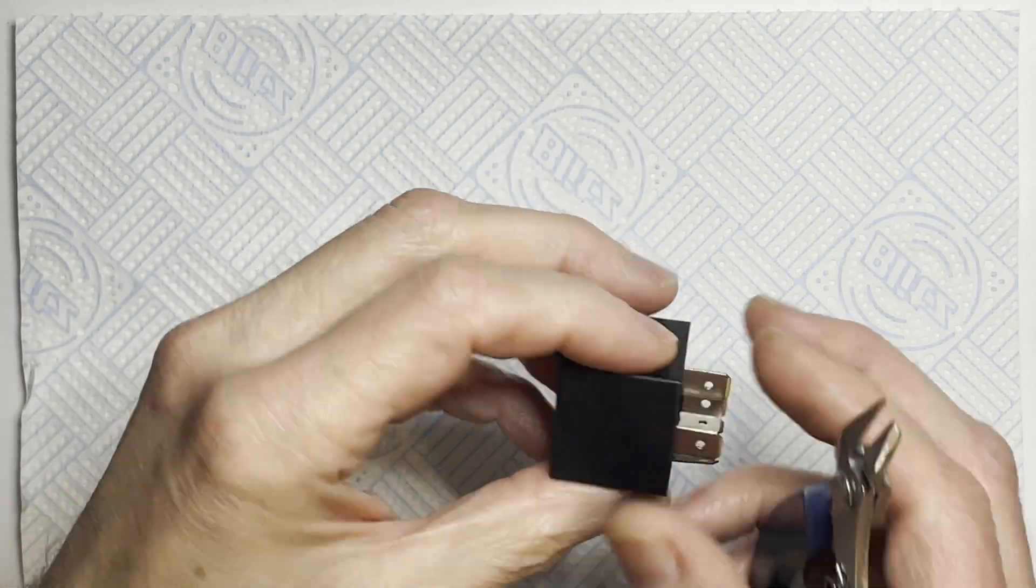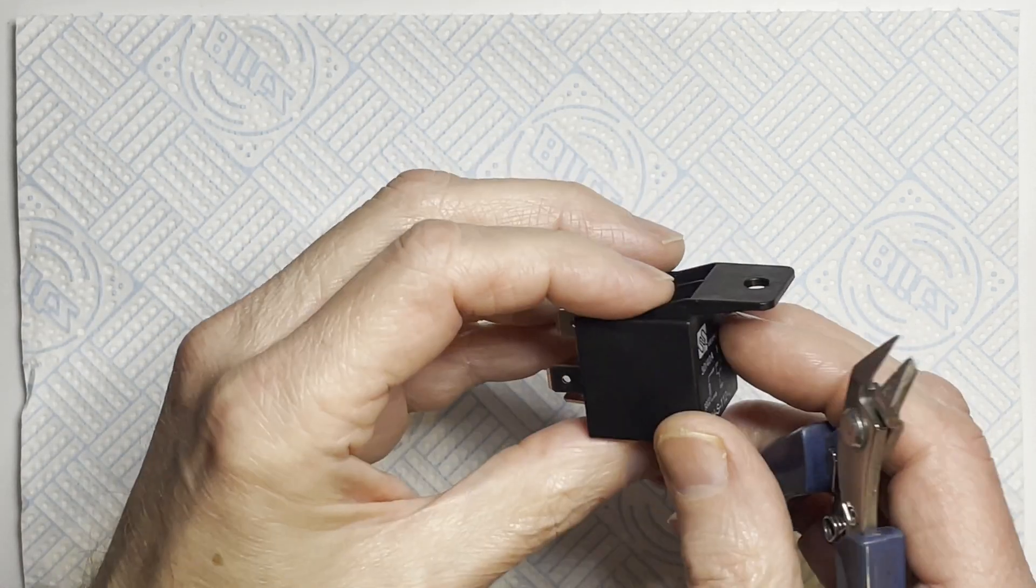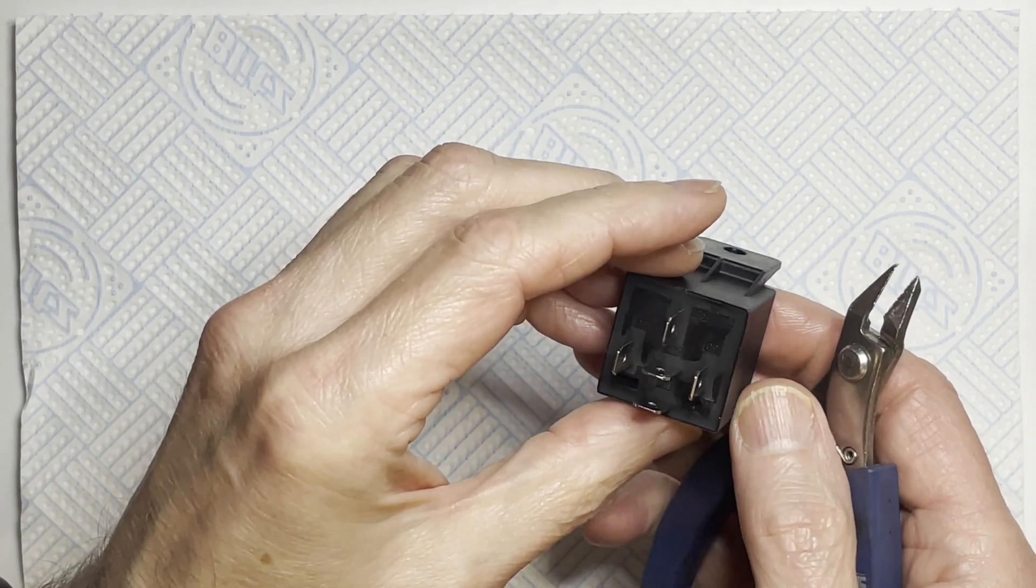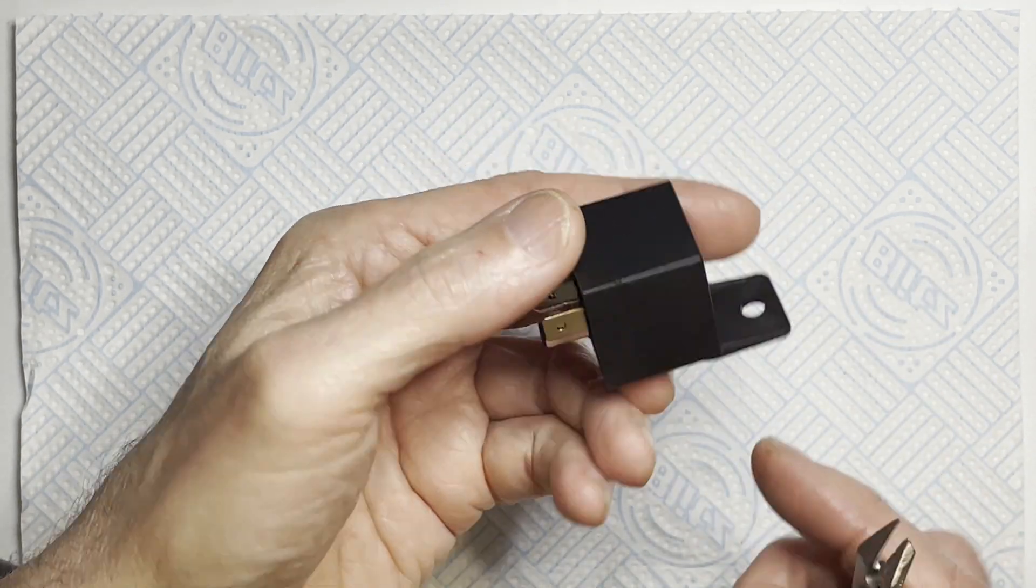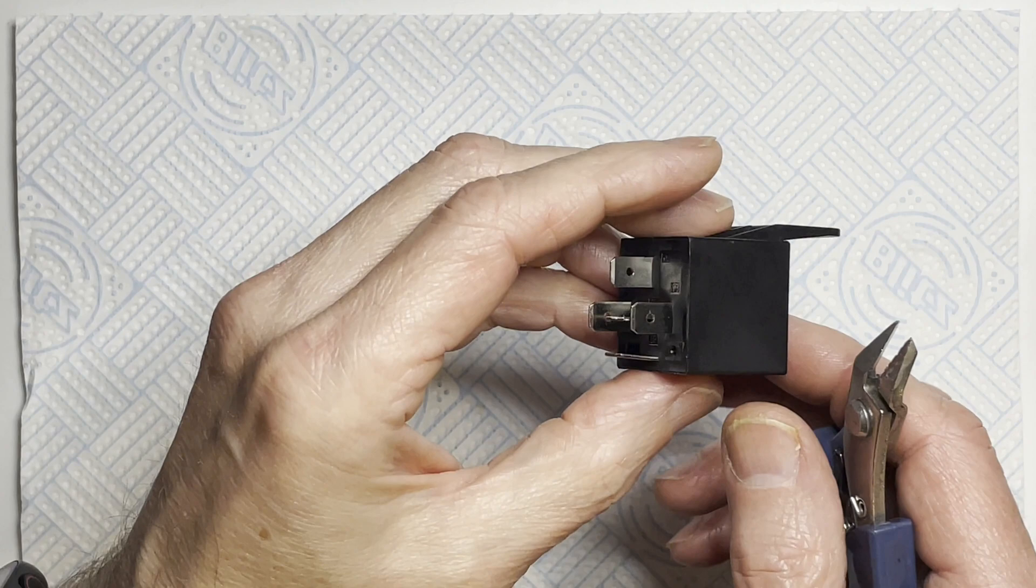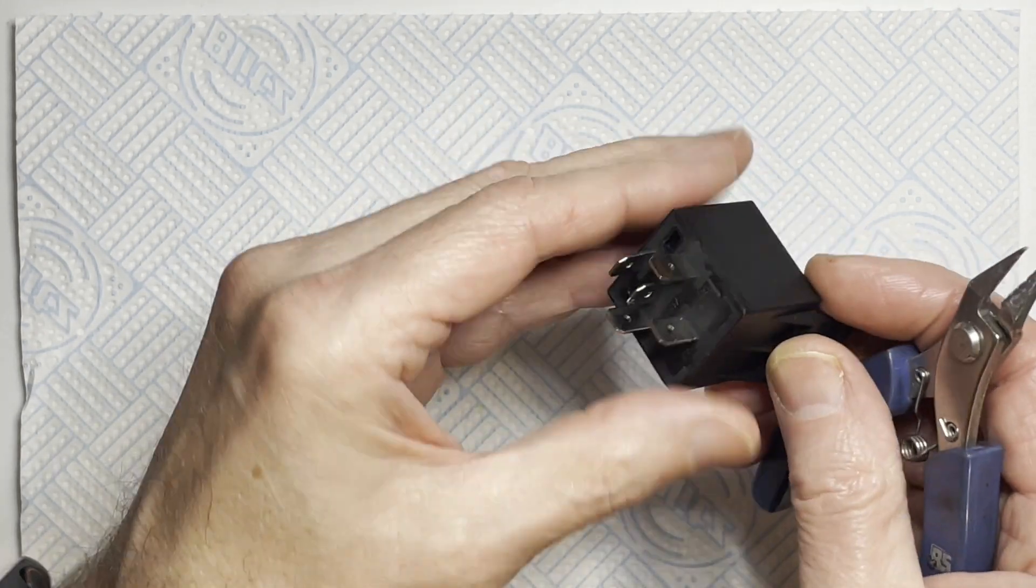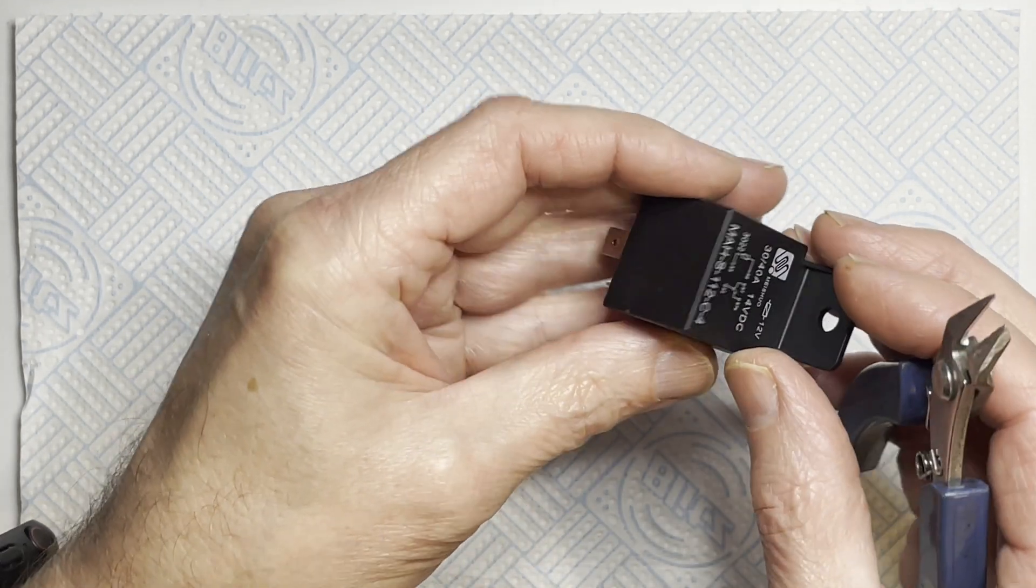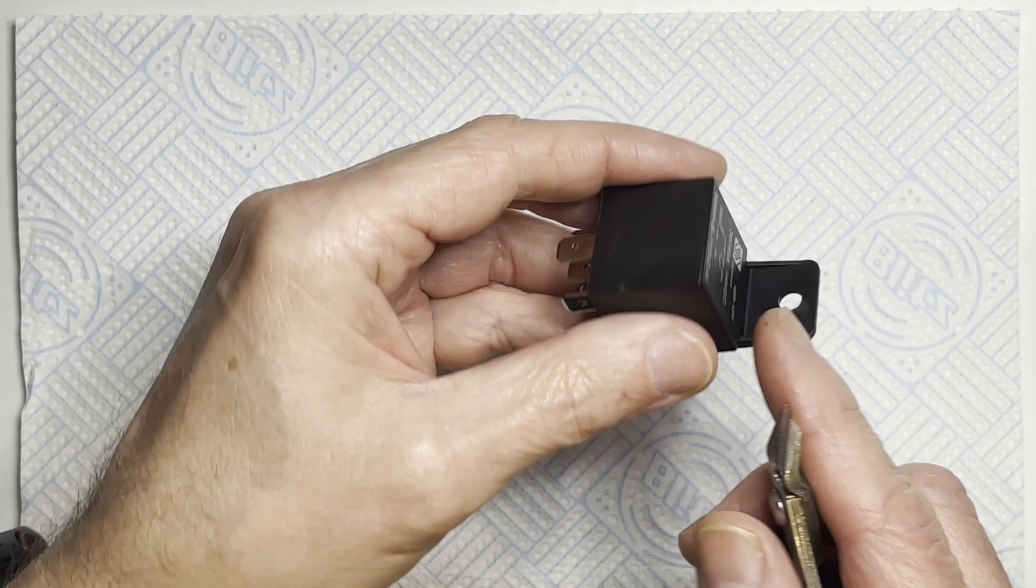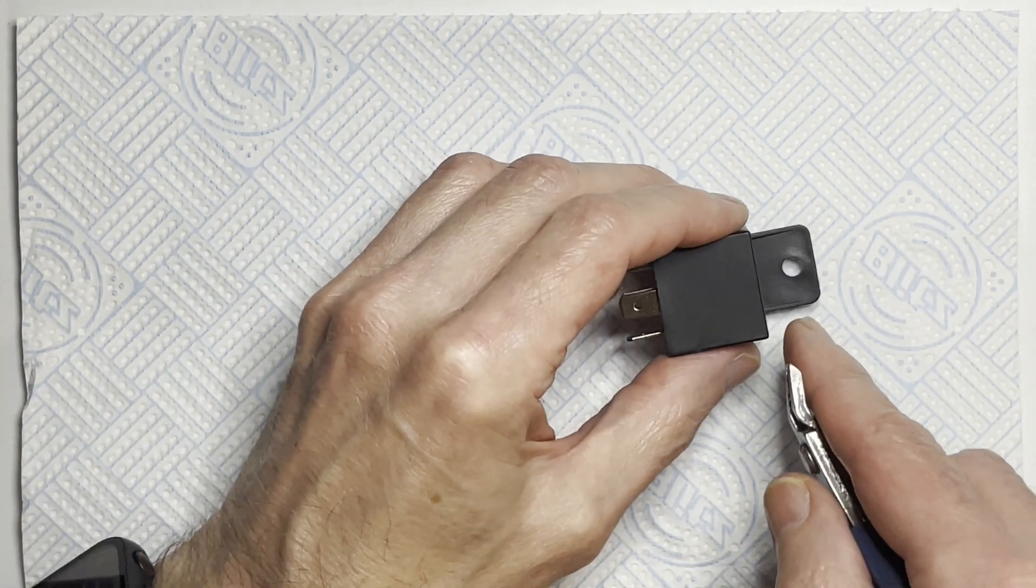Hello, this is just a quick one showing how you can extract the coil from a 12-volt automatic relay if you need either a solenoid electromagnet or just a bare coil for some project or other, as I've been using in some of mine.